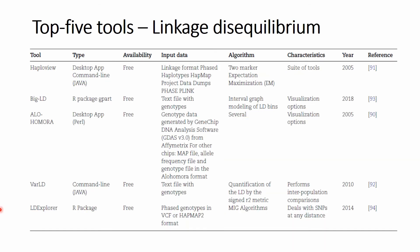Next up are the top five tools to compute linkage disequilibrium, a topic that is often discussed on this channel and one of the most popular topics around here. We use the VarLD package to compare LD structures of two populations, but as you see it's not at the top of the list in this publication. On top is HaploView, followed by BigLD, Alohomora, VarLD, and LD Explorer. On a personal note, I'm really interested in the background of the name Alohomora — it is actually a spell from the Harry Potter universe, used to unlock doors and sealed locations to uncover their secrets.